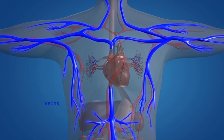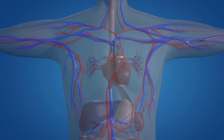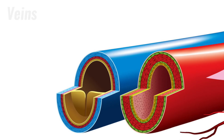Veins are blood vessels that carry deoxygenated blood back to the heart. Capillaries drain blood into very small veins called venules, which merge into larger vessels and eventually into veins. The structure of veins is similar to that of arteries, again consisting of three layers.